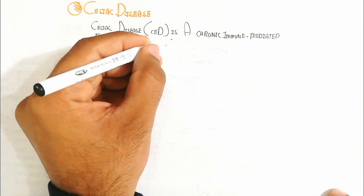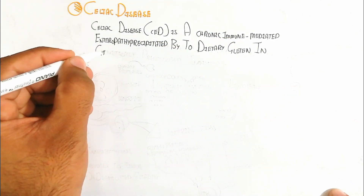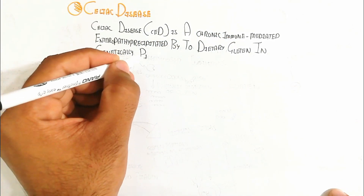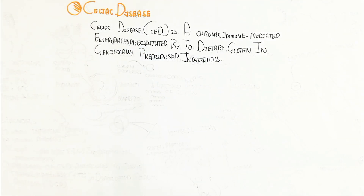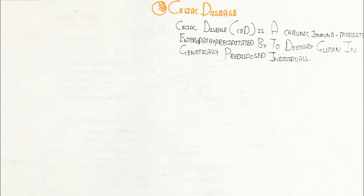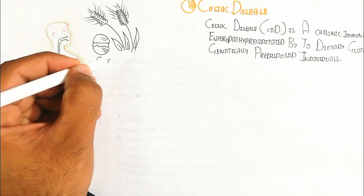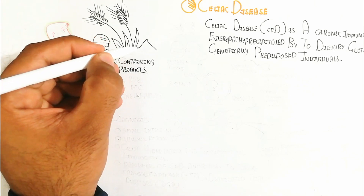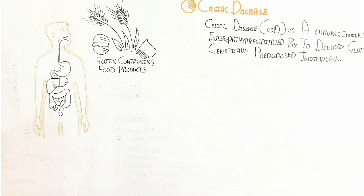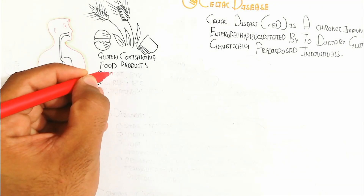It is precipitated by dietary gluten in genetically predisposed individuals. Those genetically predisposed individuals will be more sensitive and create a reaction leading to gluten allergy. Gluten-containing food products include wheat, rye, and barley, which belong to the grass family.